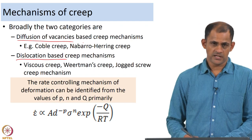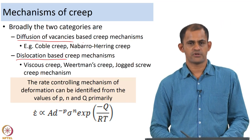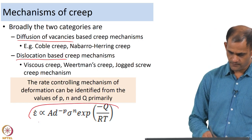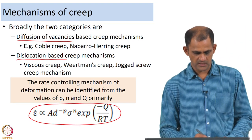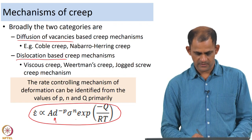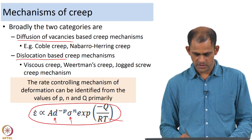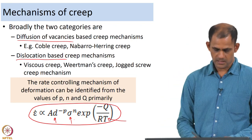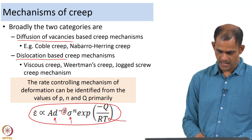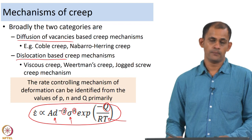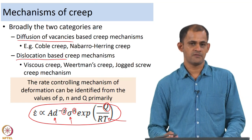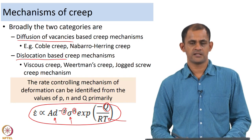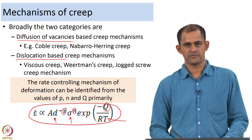In the last lecture we were also talking about how the strain rate of deformation can be described by a general equation. We said the strain rate of deformation is a function of grain size, stress, and temperature, and we introduced parameters P, N, and Q. P is the grain size exponent, N is the stress exponent, and Q is the activation energy of deformation.